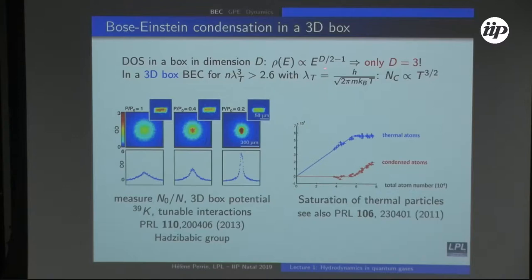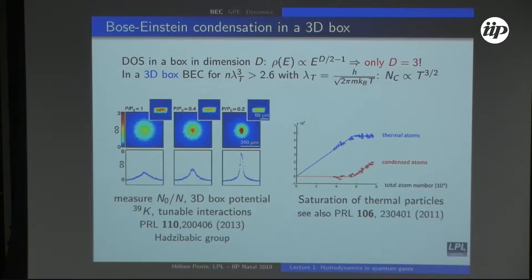In a box, as originally calculated by Einstein, the density of states scales as d/2 − 1, so d must be strictly greater than 2 for BEC. Dimension d = 2 is marginal — it does not condense in a box. A 3D box BEC has only recently been observed with cold atoms, enabled by light-tailored traps using SLM devices. This was done in the group of Hadzibabic in Cambridge, where the BEC fraction is visible in the time-of-flight momentum distribution.